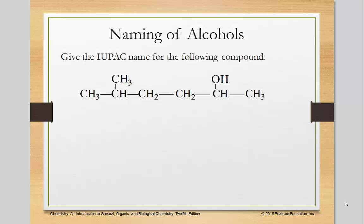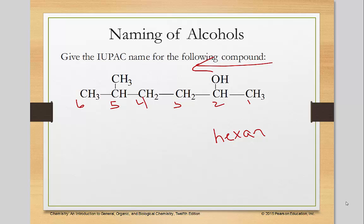Name it as if it's a regular straight chain. Looking at this example, I'm going to start counting from the right hand side because that's closest to the alcohol — one, two, three, four, five, six — so it's hexane. Instead of writing the E on the end because it's an alcohol, I'm going to write OL. I have to tell people where that OH group is; it's on the second carbon, so I'm going to say 2-hexanol.